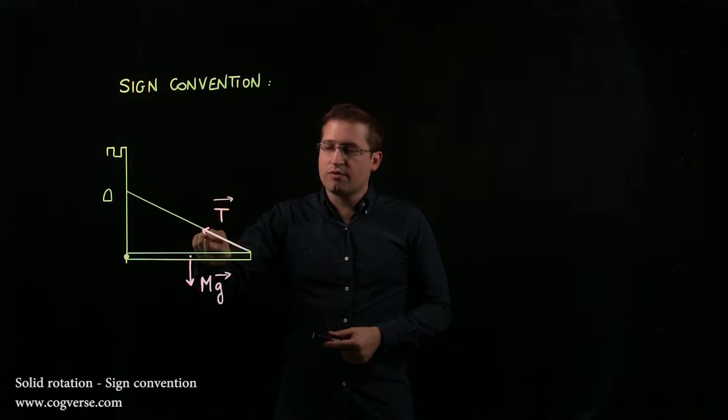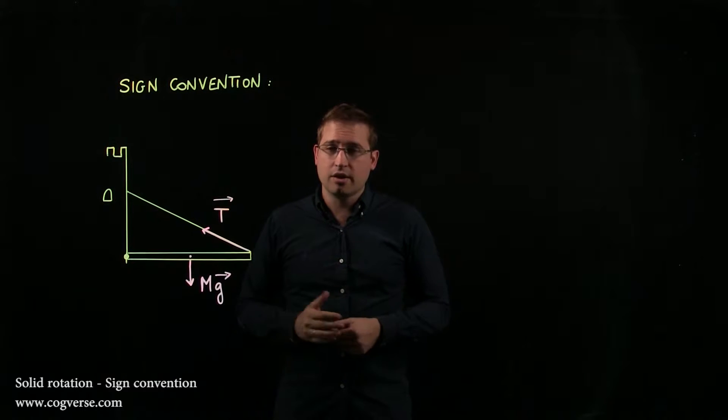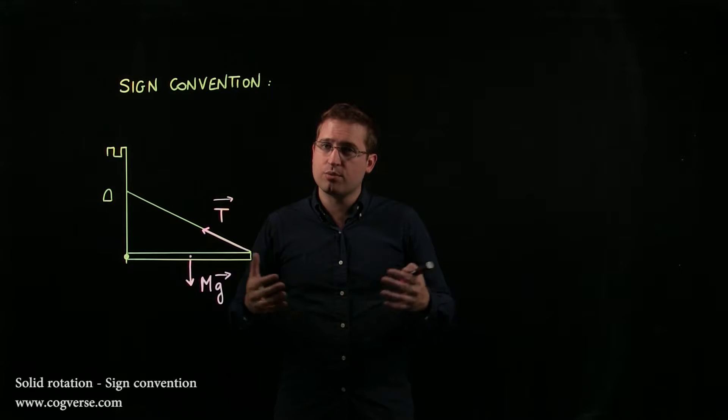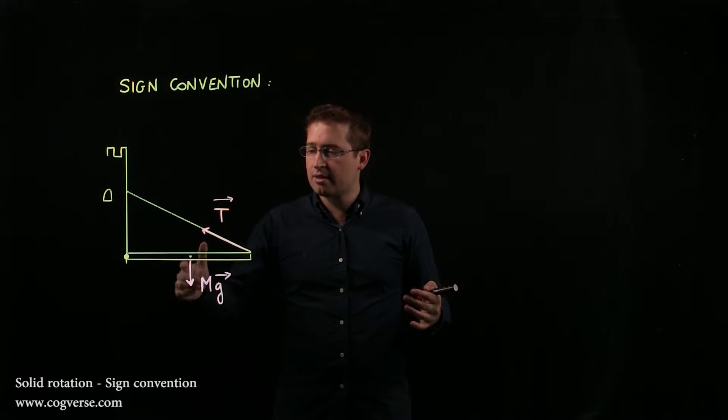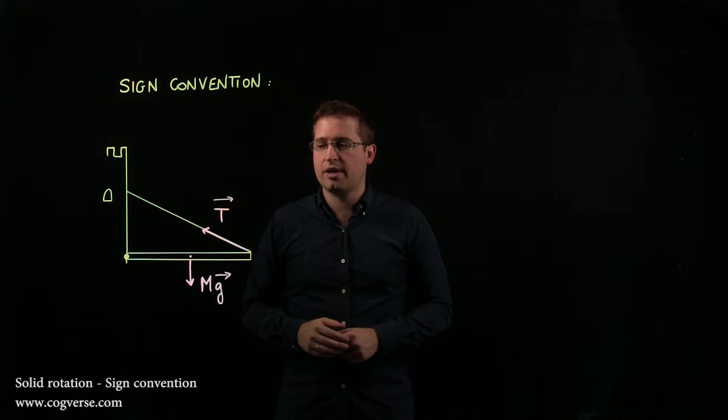Therefore we have a tension force here and we have the weight force applied to the bridge. If we assume that the bridge has a uniformly distributed mass, we know that its center of mass is at the geometric center and therefore that's where the weight force is applied.